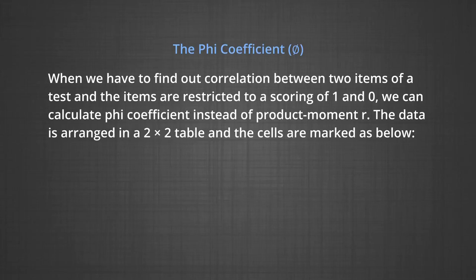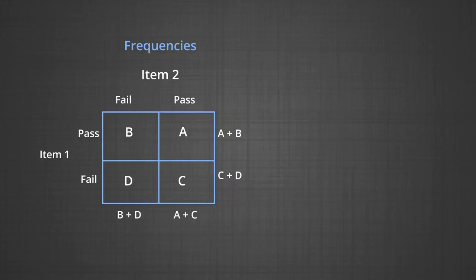I am going to explain another method of calculating correlation called the phi coefficient. When we have to find correlation between two items of a test where items are restricted to scoring of 1 and 0, then we can calculate phi coefficient instead of product moment r. The data is arranged in a 2 by 2 table and the cells are marked as follows. This is a 2 by 2 contingency table with fail and pass on top (item number 2), and pass and fail on the left side (item number 1). The cells are designated as B, A, D, and C. The marginal values show A+B, C+D, B+D, and A+C.